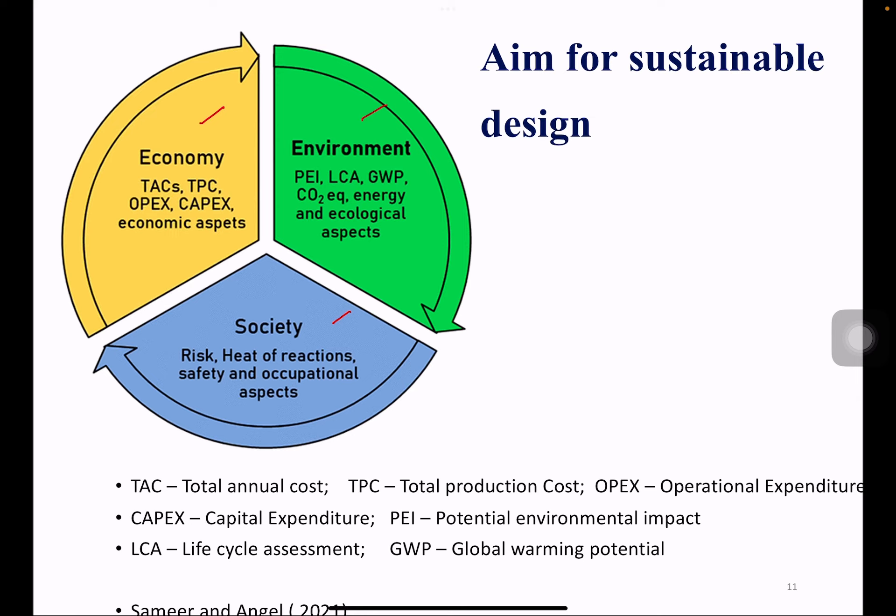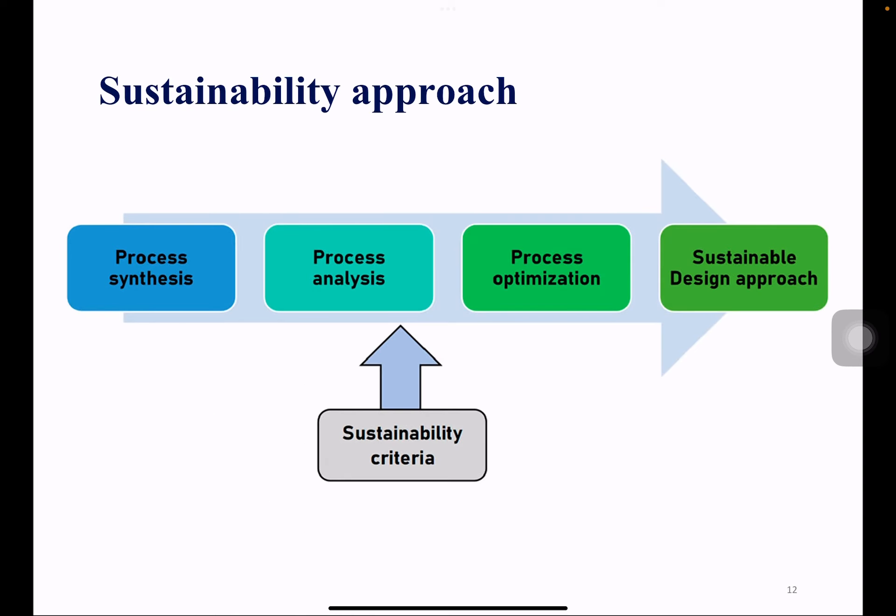Chemical process sustainability is conceptualized as environmentally friendly actions that enhance green processes, including relevant aspects of chemical processes such as improving the efficiency of existing processes, conserving energy, and boosting the economy.